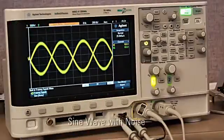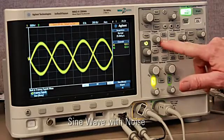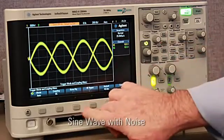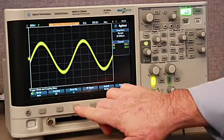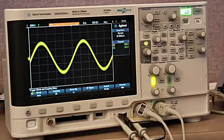Sine with noise training signal is used to teach students about trigger coupling, when to use high frequency reject versus noise reject, and what the difference is in order to get a stable trigger in a noisy environment.